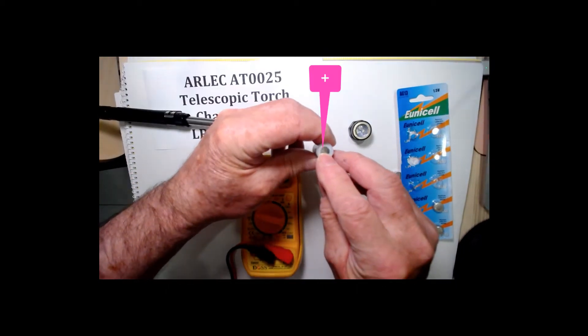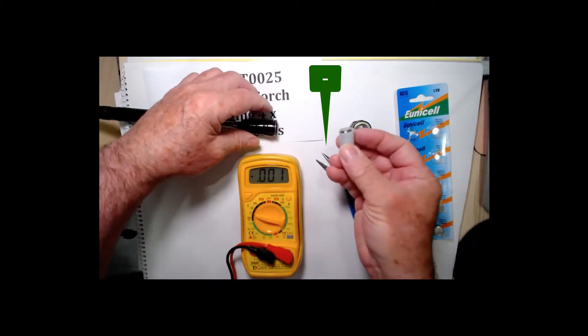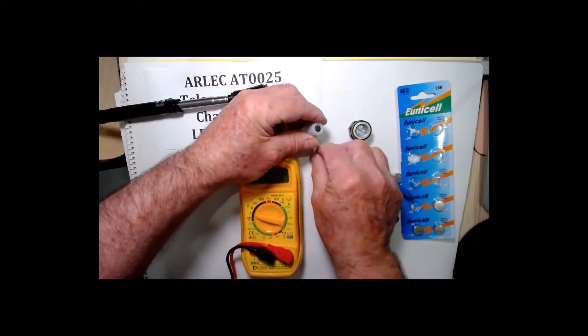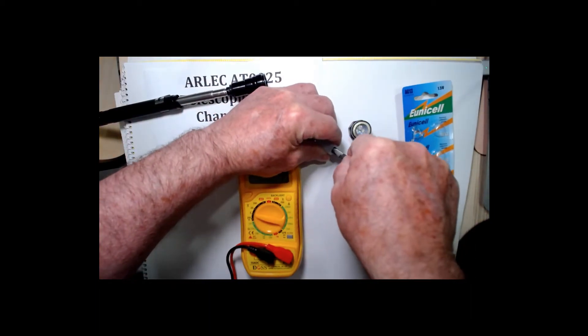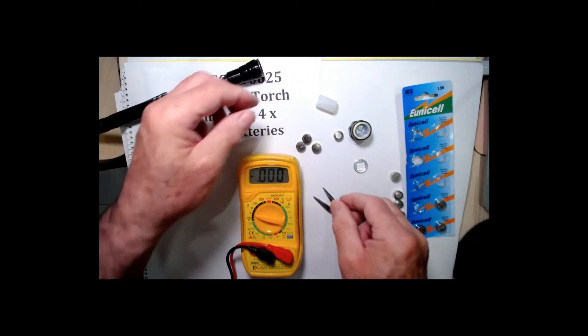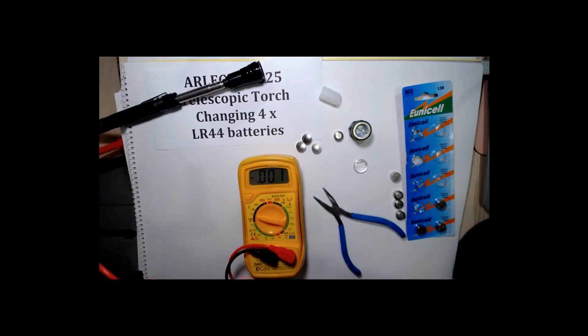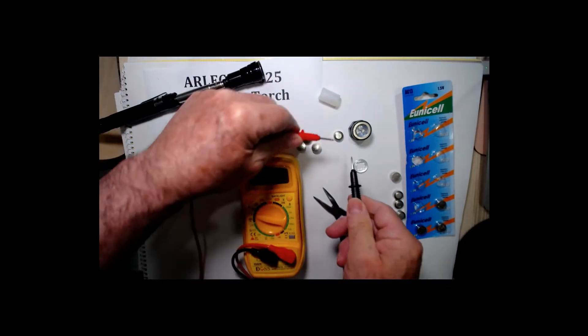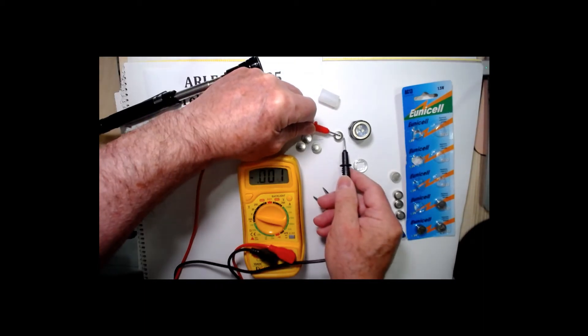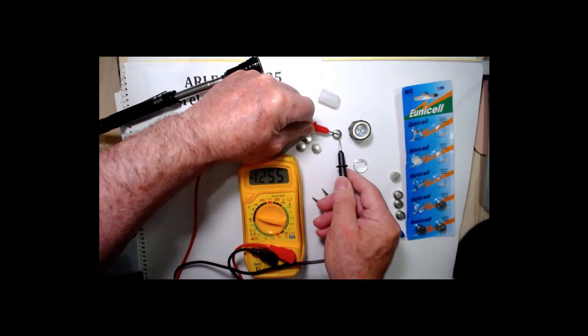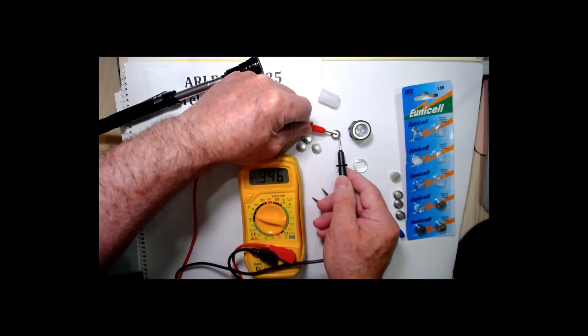This is a positive terminal, negative terminal. You can push those batteries out. I checked the voltage on them before, they're a bit below 1.25. I noticed the light's getting a bit dim so I wanted to change the batteries.